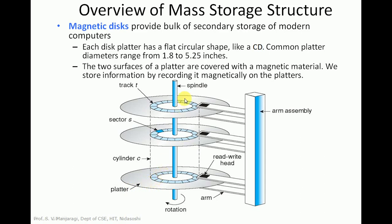The two surfaces of a platter are covered with magnetic material. We store information by recording it magnetically on the platters. There is a read/write head that is moved above each surface of every platter. The heads are attached to the disk arm. So there is a disk assembly — for every platter there is an arm consisting of a read/write head. The read/write head moves over the surface of the platter. The surface of a platter is logically divided into tracks, as we can see here.